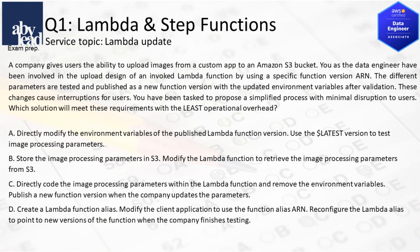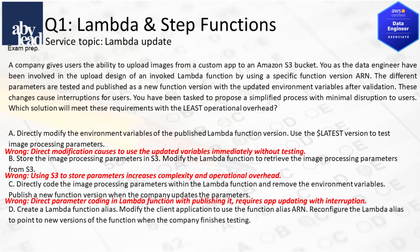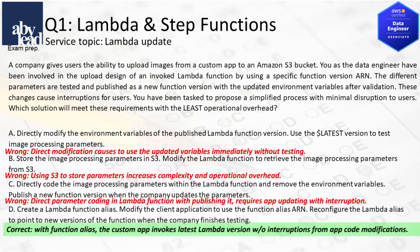Question 1: How do you update a Lambda function and its variables with least overhead and minimal disruption? Parameter modification in Lambda code without testing causes app update interruptions. Also, storing parameters in S3 increases complexity and overhead. Better is to invoke the latest Lambda version via function alias without interruptions.